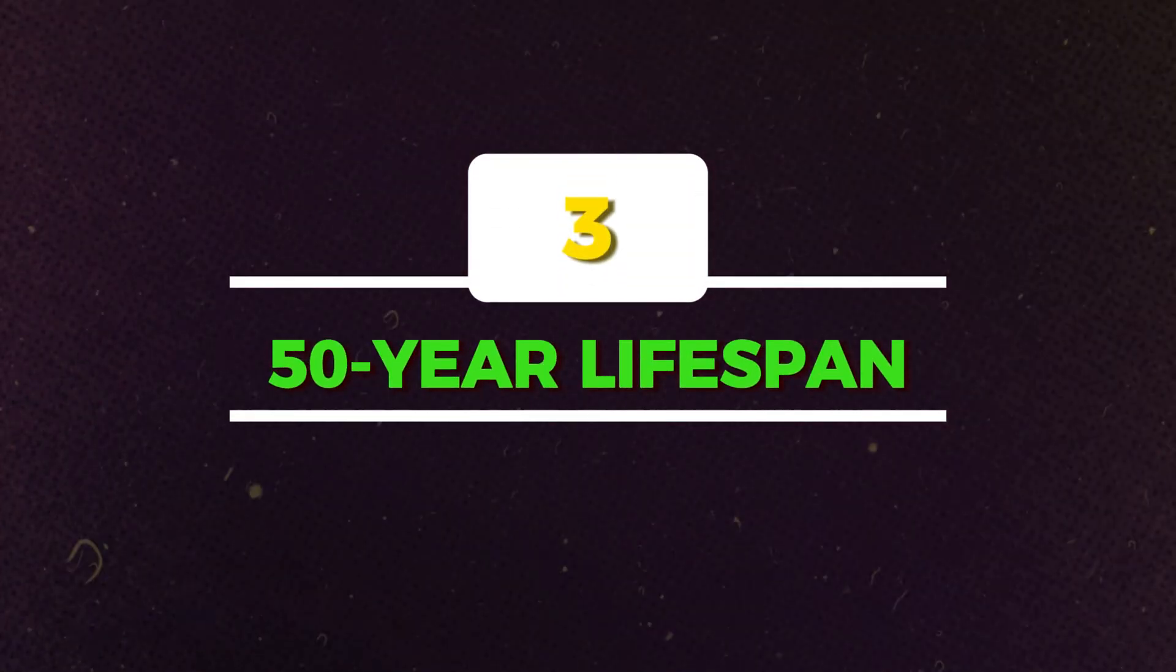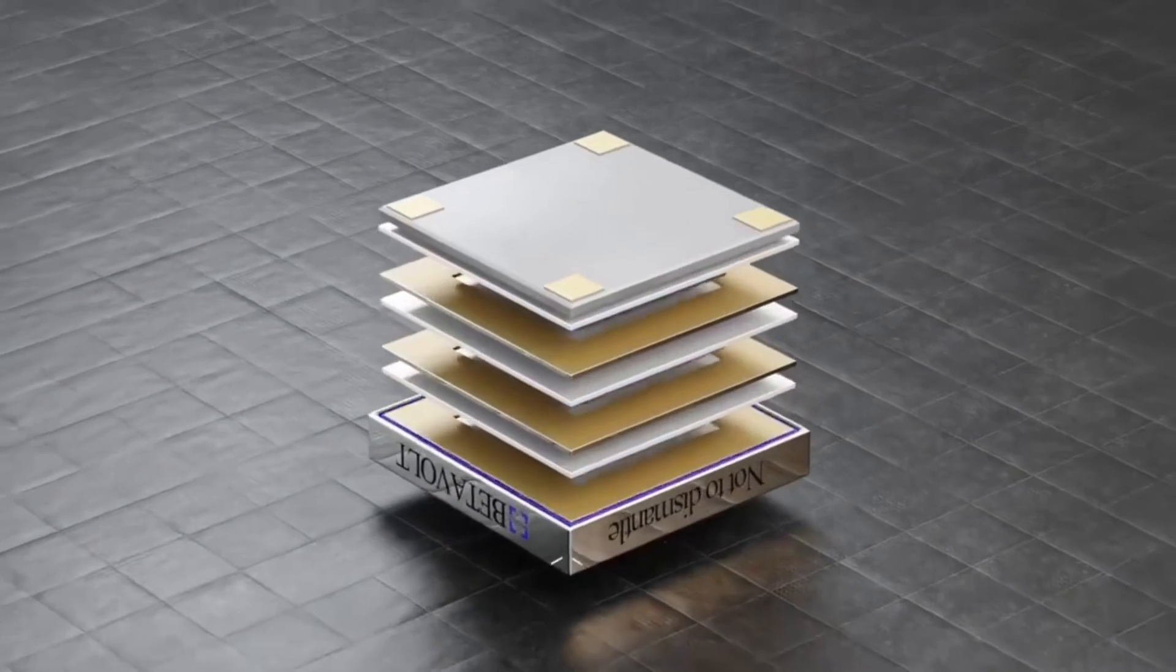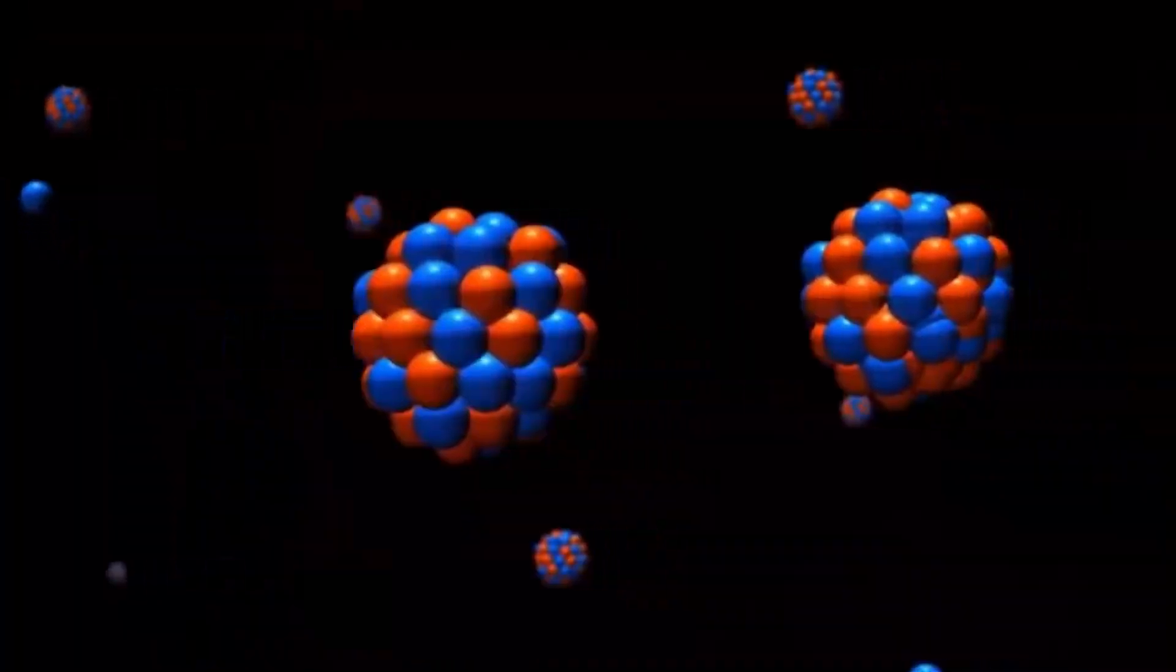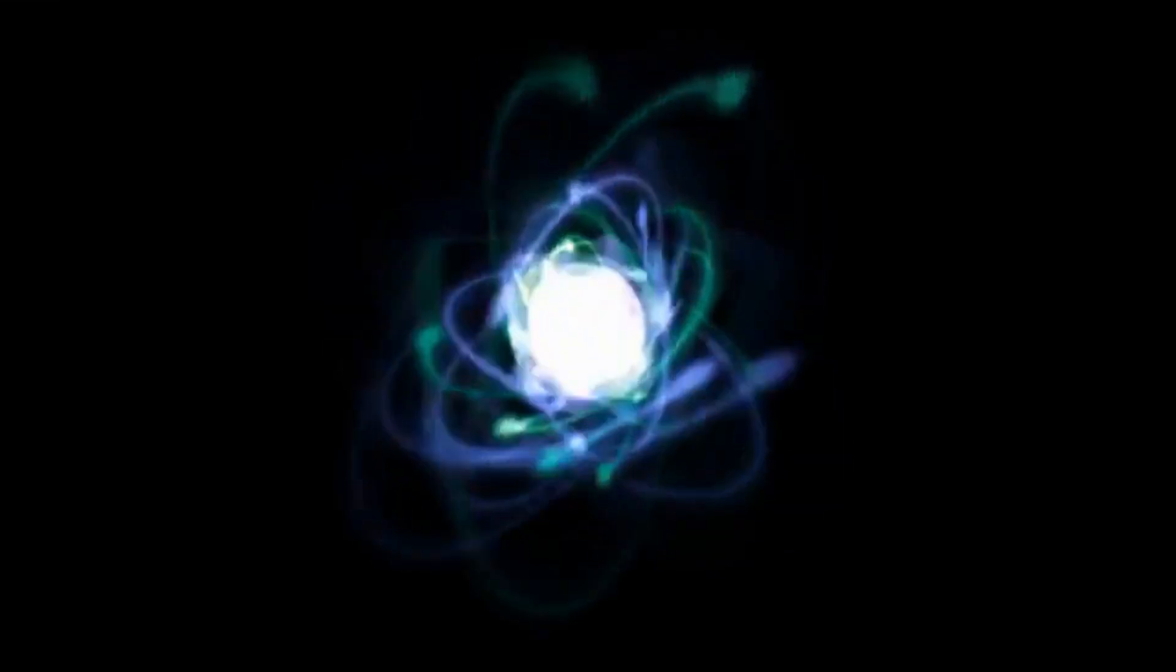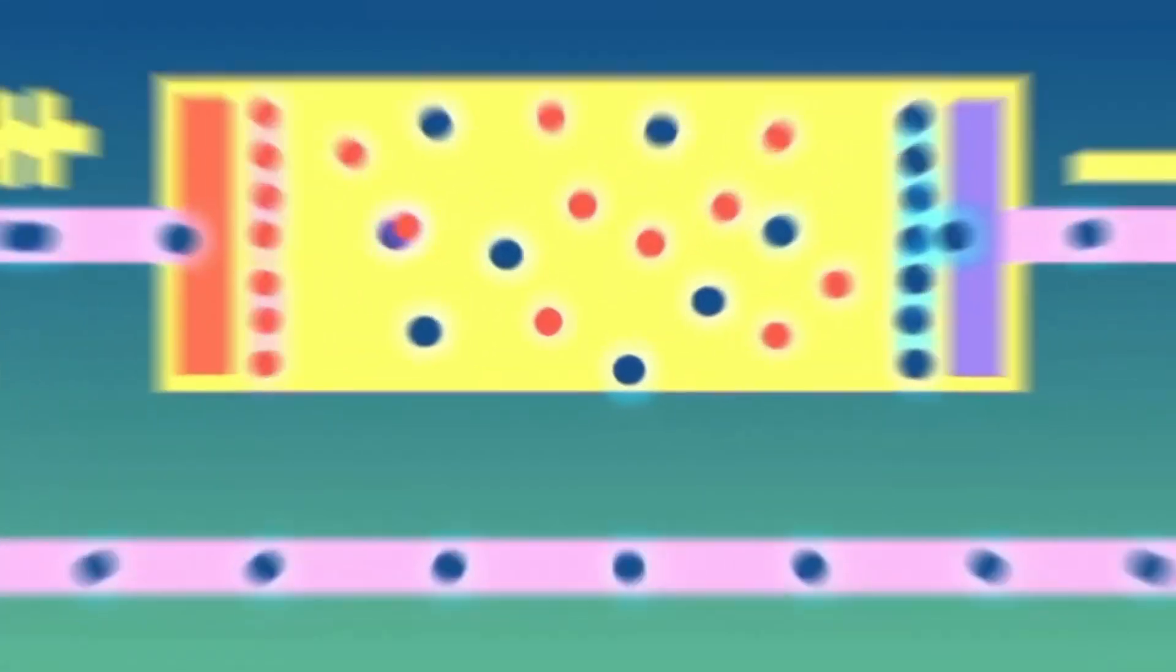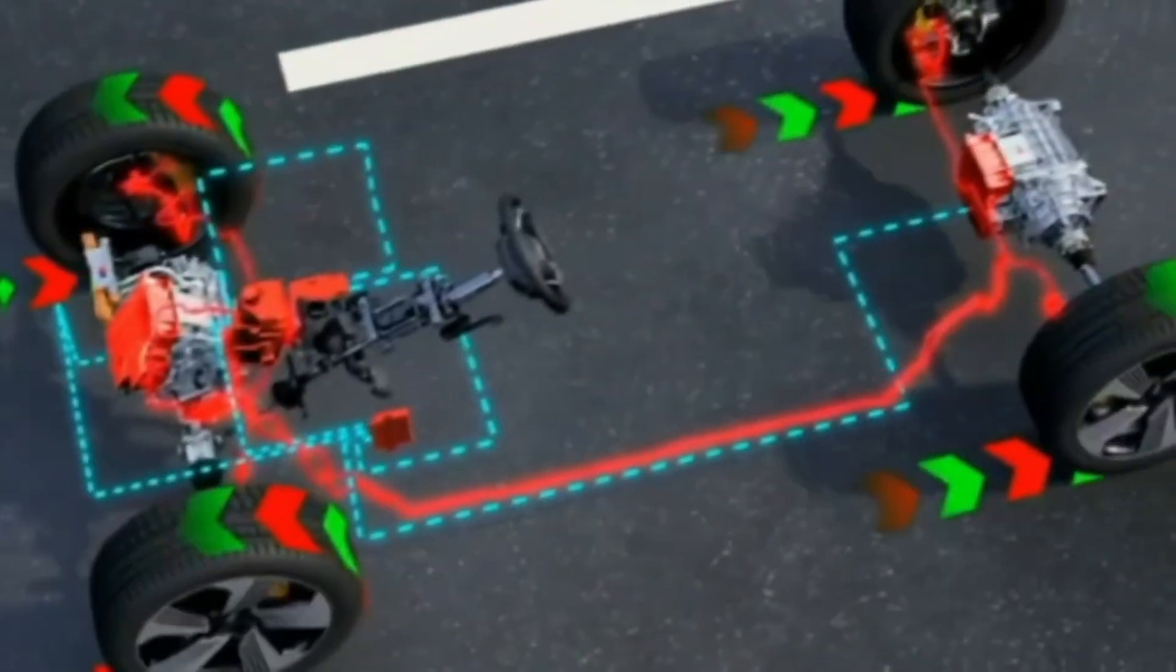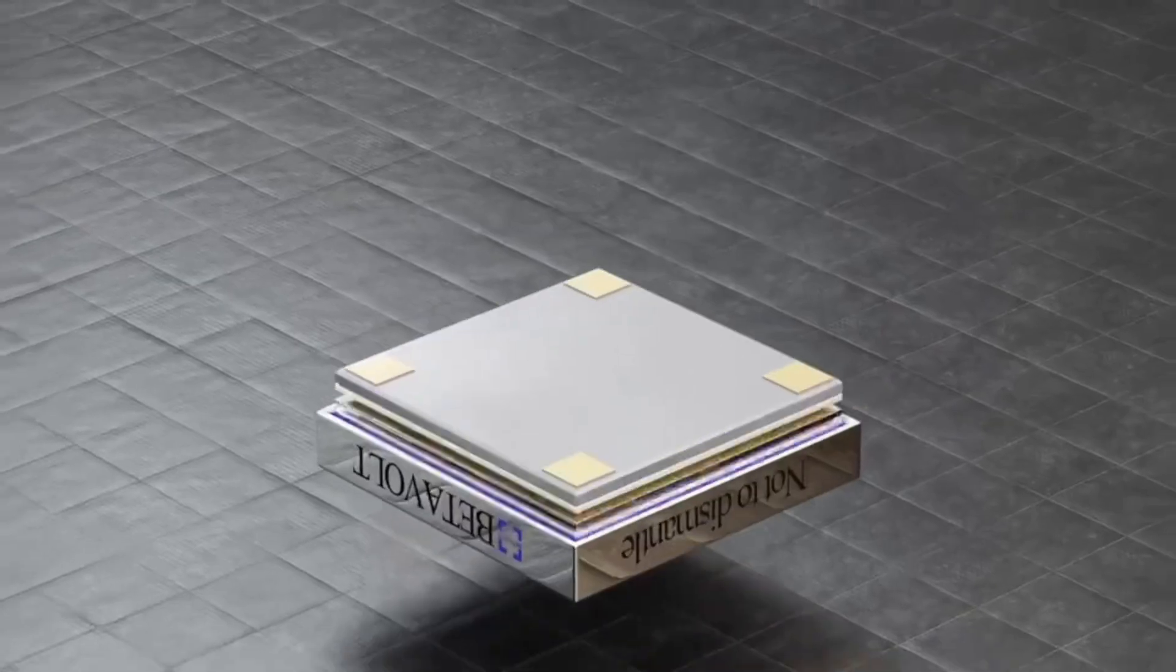Can a battery really last for 50 years? Yes, the BV-100 can. This extraordinary lifespan is attributed to the half-life of the nickel-63 isotope, which is approximately 96 years. The battery can provide a stable supply of electricity for up to 50 years before its power output significantly diminishes. Such longevity is unparalleled in conventional battery technologies, making it particularly valuable for applications where maintenance or battery replacement is impractical.